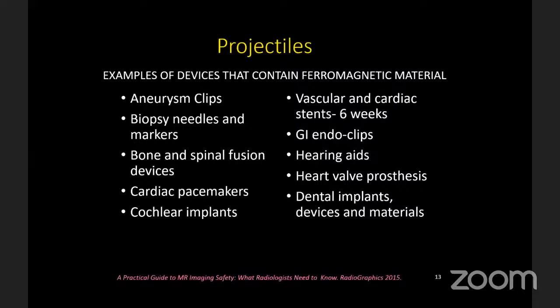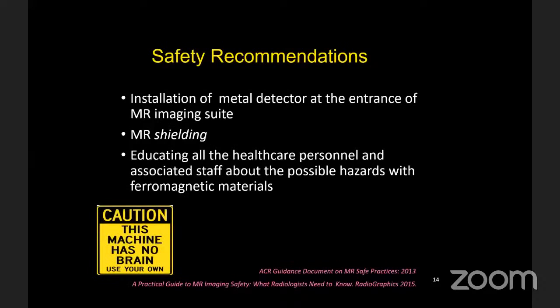Various devices or implants can cause projectile injury, including aneurysmal clips, spinal fusion devices, cardiac pacemakers, cochlear implants, hearing aids, heart valve prostheses, dental implants, and vascular stents placed before six weeks. Safety recommendations include installation of a metallic detector at the entrance of the MR suite, MR shielding, and educating all healthcare personnel about possible hazards with ferromagnetic materials.